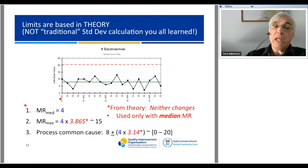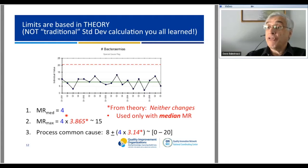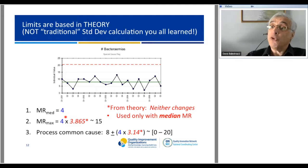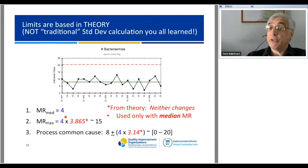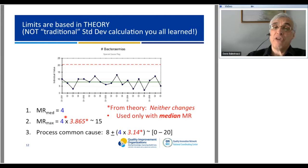The median moving range is the key—it's the number from which all estimates of variation come. That is a very important number. It doesn't matter whether you have 10, 20, 30, 50, 100, 500, or 1,000 data points. If you take the successive absolute differences and take the median, all the information about the variation is contained in that median moving range.